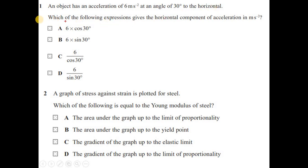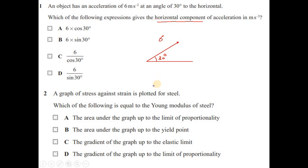Which of the following expressions gives the horizontal component of the acceleration in ms⁻²? If you have an acceleration making an angle of 30 degrees, and the acceleration is 6 ms⁻², you need to find the horizontal component along the horizontal line. This is the adjacent component, involving cosine, so it is 6 cos 30°. The answer is option A.